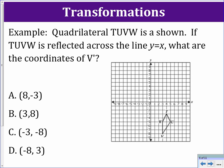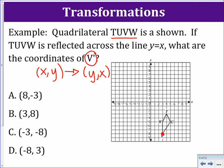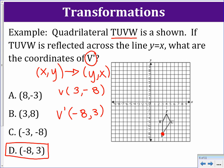Here is an example reflection problem. Quadrilateral TUVW is reflected across the line y = x. What are the coordinates of V prime? Since the rule for reflecting across y = x is that point (x, y) goes to (y, x), we first find the coordinates of V, which are (3, -8). Therefore V prime has coordinates (-8, 3). So the answer is D.